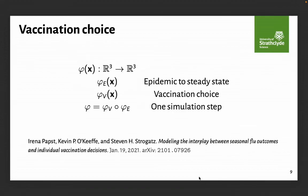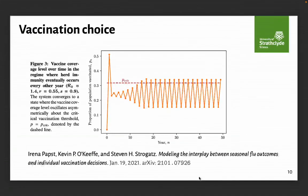And they find for some choices of the parameter values in the epidemic and the choice function that if there is a cost to being vaccinated, then they get this interesting behavior where they get this oscillation about the herd immunity threshold. And that's interesting. And this is not something that I've seen elsewhere.